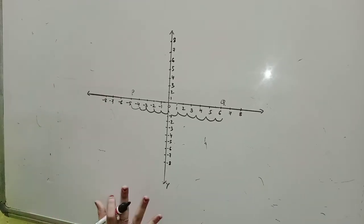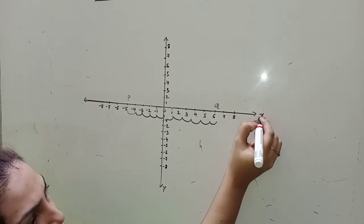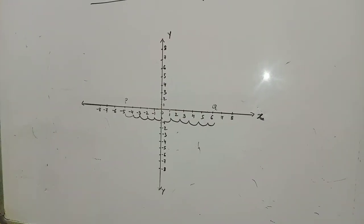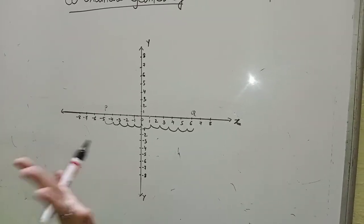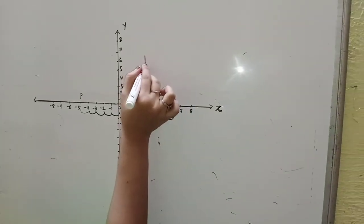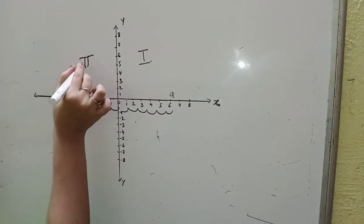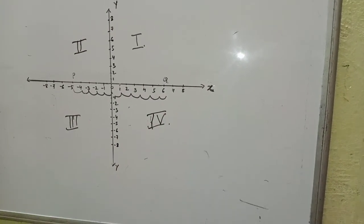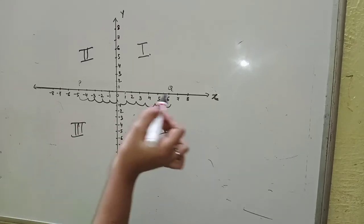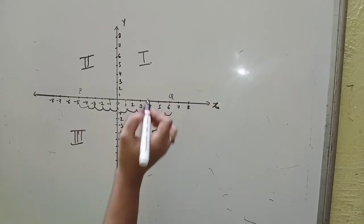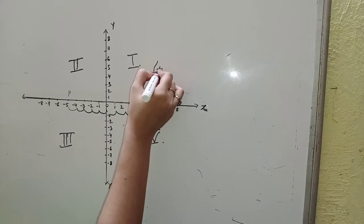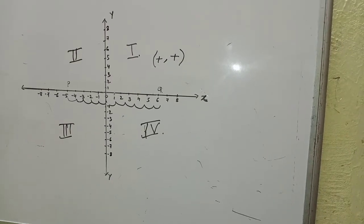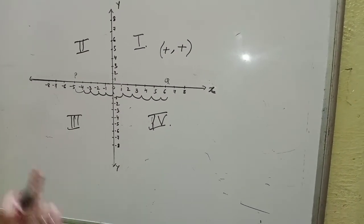As we all know, on graph paper there are two axes. The first one, horizontally, is the x-axis and the vertical one is the y-axis. On these axes there are four quadrants. The first quadrant is here, the second quadrant is this one, the third quadrant is this one, and the last one is the fourth quadrant. In the first quadrant, the x-axis side is positive and the y-axis is also positive, so it is plus, plus — meaning positive, positive.